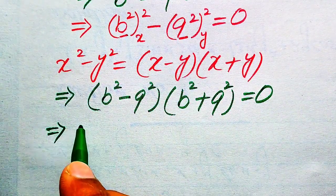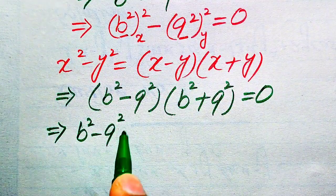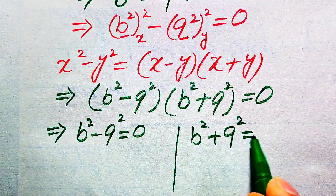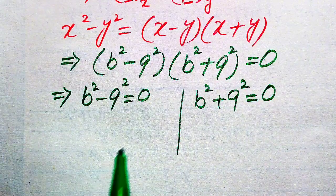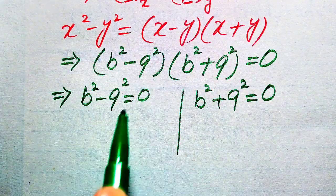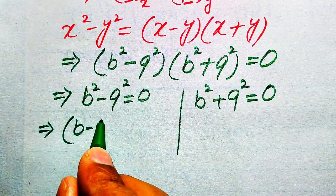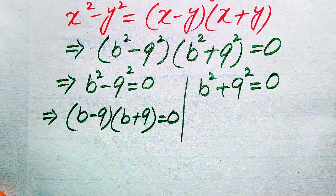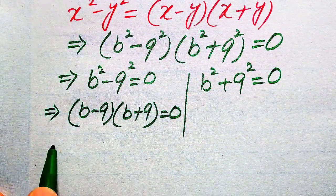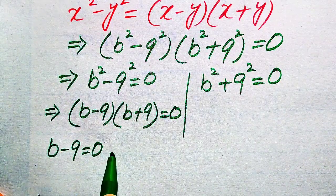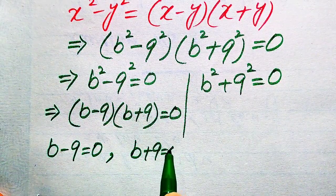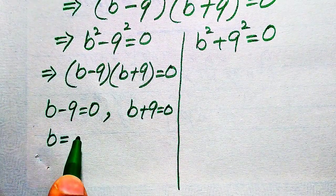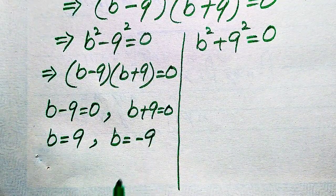We divide this into two cases. Case 1: b² minus 9² equals 0. Case 2: b² plus 9² equals 0. For Case 1, we apply the difference of squares formula again: (b minus 9)(b plus 9) equals 0, giving b minus 9 equals 0 or b plus 9 equals 0. So the two values of b are plus or minus 9.